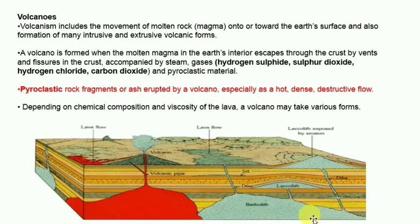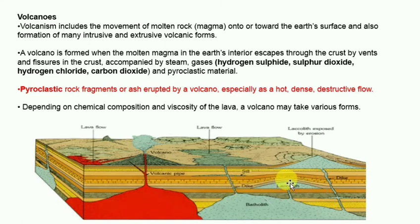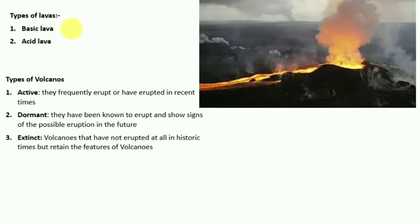A laccolith is a large dome-shaped intrusive body with a level base connected by a pipe-like conduit from below. Volcanic lavas are of two types: basic lava and acid lava. Basic lava is the hottest lava — highly fluid, dark colored, rich in iron and magnesium but poor in silicon.